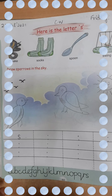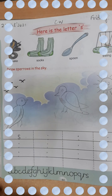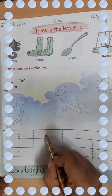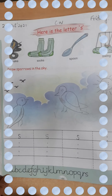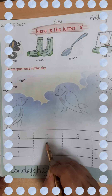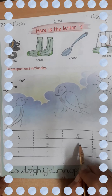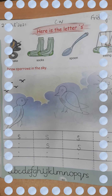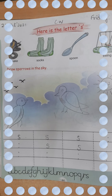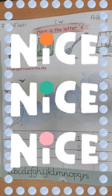Mama ko pahle aise dots laga denge. Then you will make curve and curve back — S. Curve and curve back — S. Kal bhi likha tha. Curve and curve back — S. In this way you have to complete this whole page. So this is all about your today's work. Do the experiment by planting a seed in a cup of ice cream or other container and look how the plant grows. Good luck, thank you.